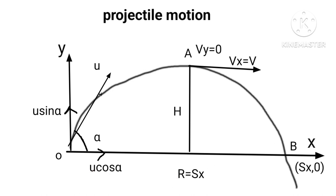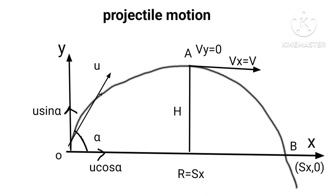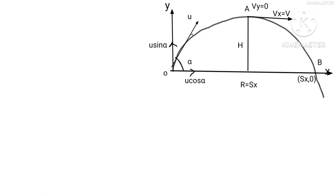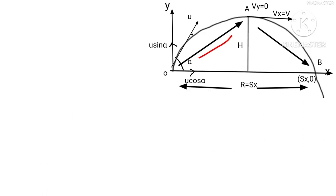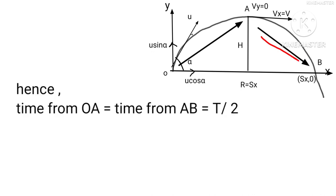Let T be the time of flight, meaning the time until first strike on the ground. The particle first ascends to maximum height H, then descends to B. The time of ascent is always equal to the time of descent. Hence, time from O to A equals time from A to B, which equals T upon 2.